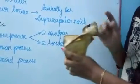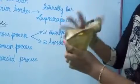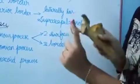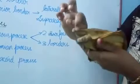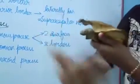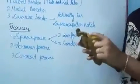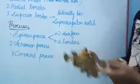Now coming to the acromion process. It has two borders — the lateral border and the medial border — and two surfaces: the superior surface and the inferior surface. It has an articulating facet which articulates with the clavicle, that is the collar bone. Now coming to the coracoid process: the word coracoid comes from the Greek word meaning the beak of the crow, as it resembles the crow's beak.